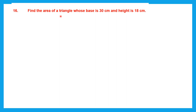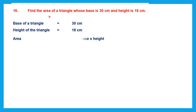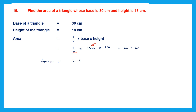Question 16: find the area of a triangle whose base is 30 centimeters and height is 18 centimeters. Base and height are given. Using the formula: area equals half into base into height — that is 1 by 2 into 30 into 18. Cancel 2 and 30 to get 15. Then 15 into 18 equals 270. Area equals 270 centimeters square.